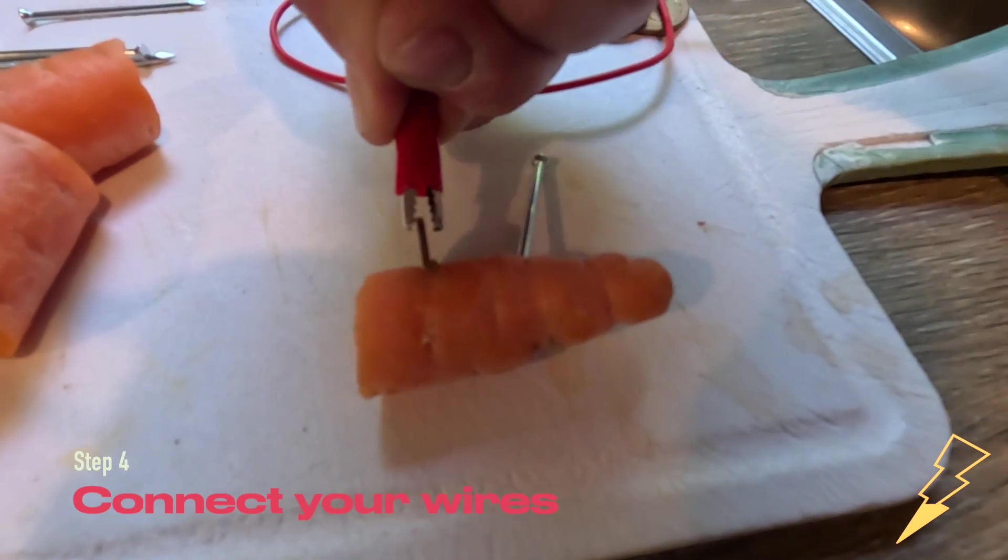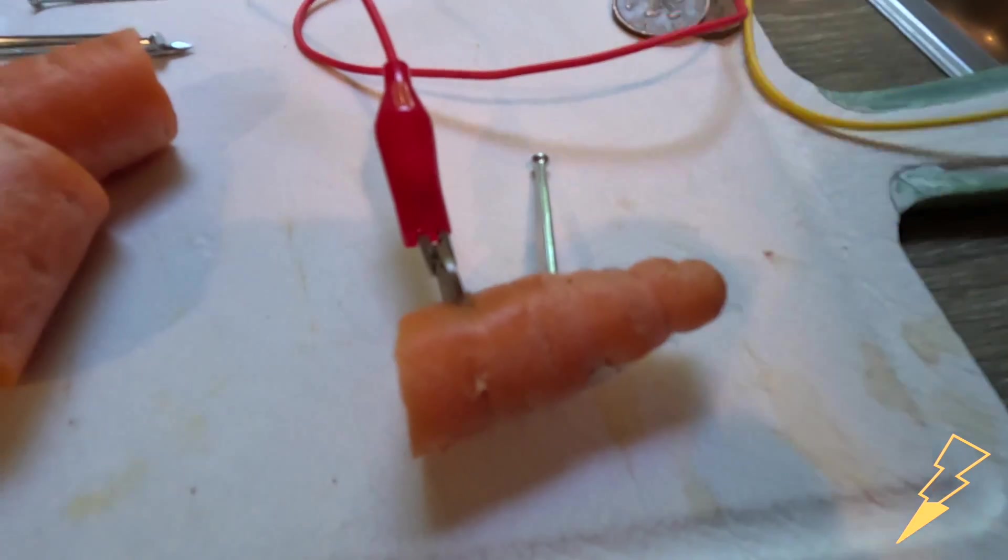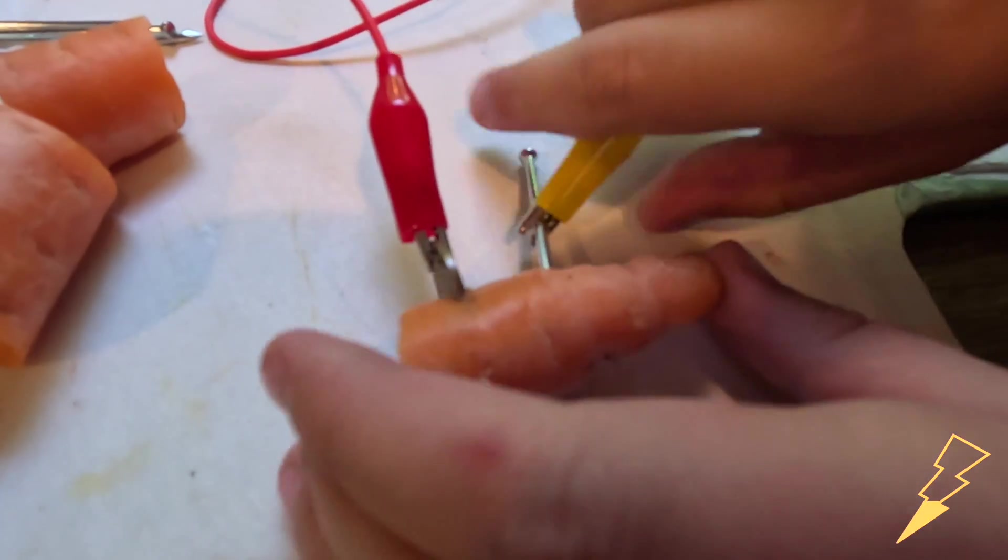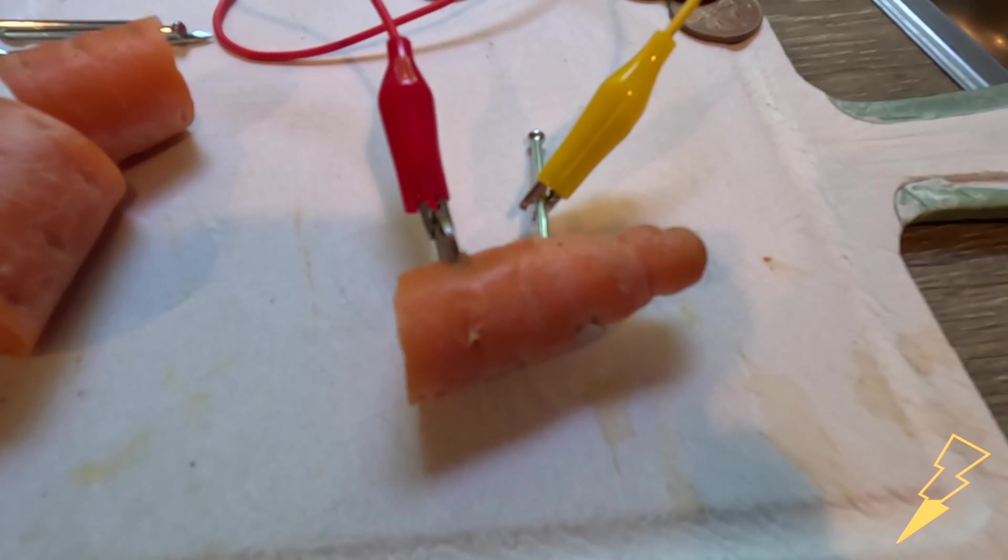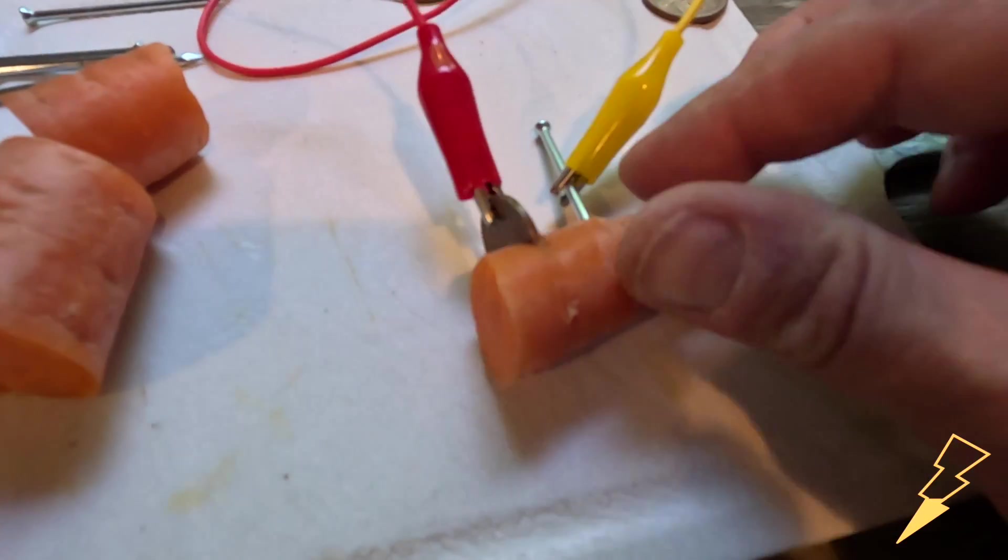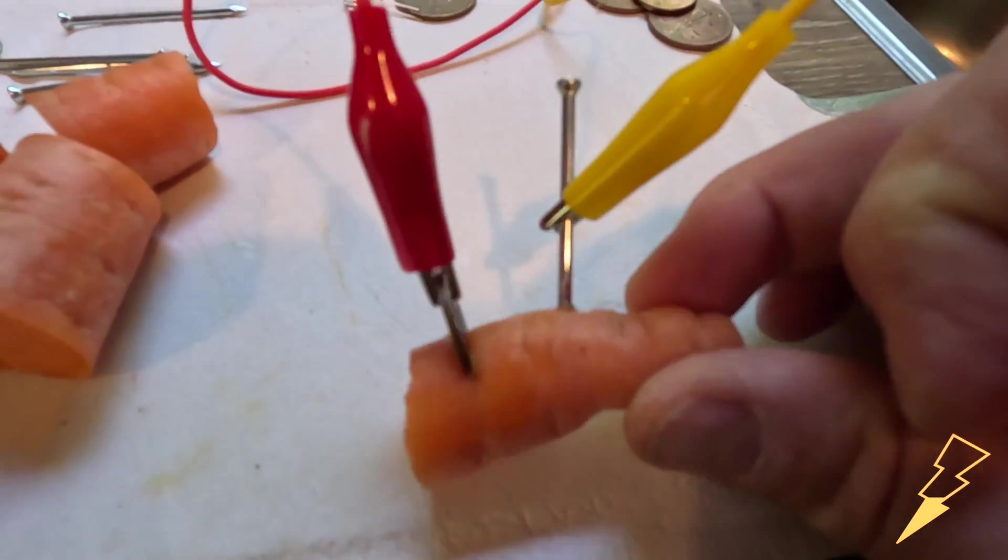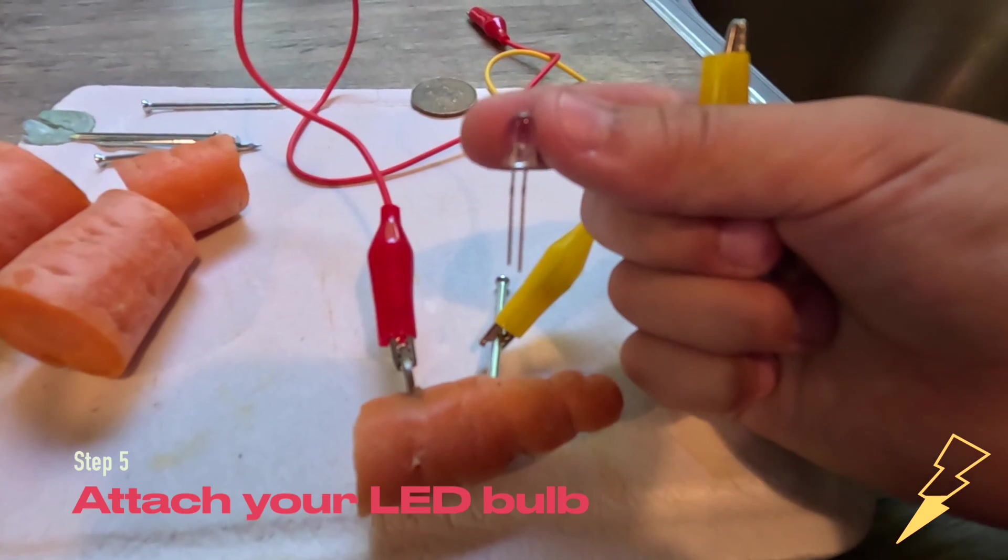Now we need to connect our alligator clips to the copper coin and the zinc nail. The nail and coin are known as our electrodes. So now we've got carrot, two electrodes connected to a wire. We need to connect it to our light bulb.